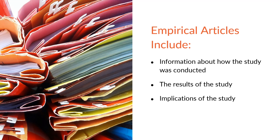An empirical research article will contain certain types of information. It will include information on how the study was conducted. For example, was it a survey? If so, how many people participated? If it was a controlled experiment, what were the variables? What procedures were followed?